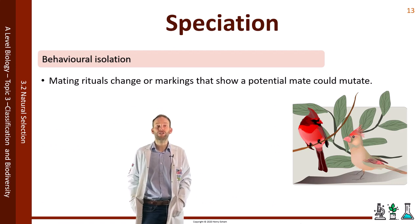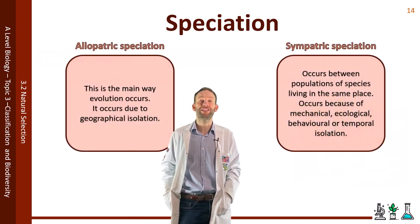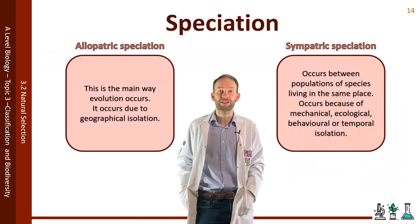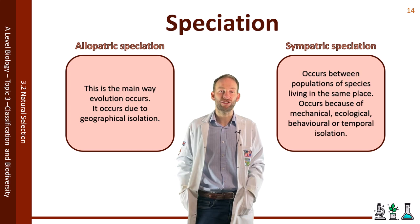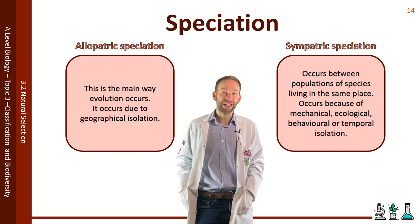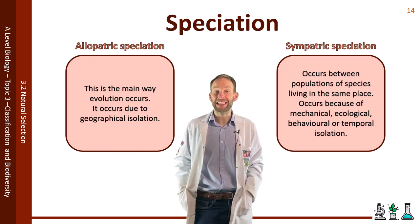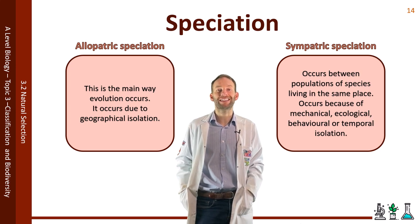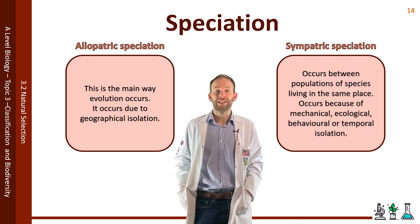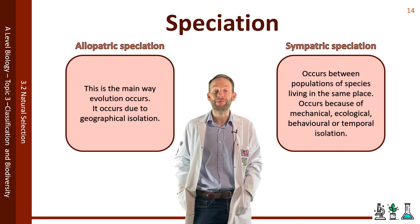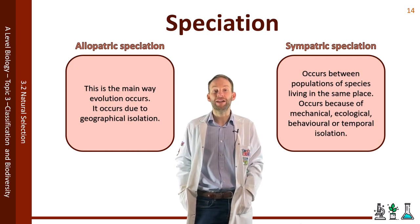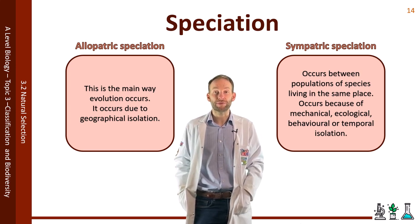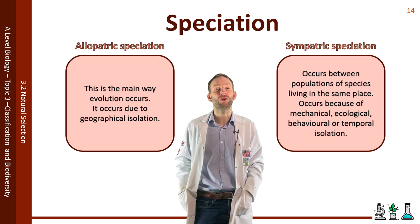If reproductive isolation occurs, there are two ways that speciation can proceed: allopatric speciation and sympatric speciation. Allopatric is the main way that evolution occurs and is due to geographical isolation. Sympatric occurs between populations of species living in the same place, so it involves one of the other isolating mechanisms — mechanical, ecological, behavioural, or temporal.